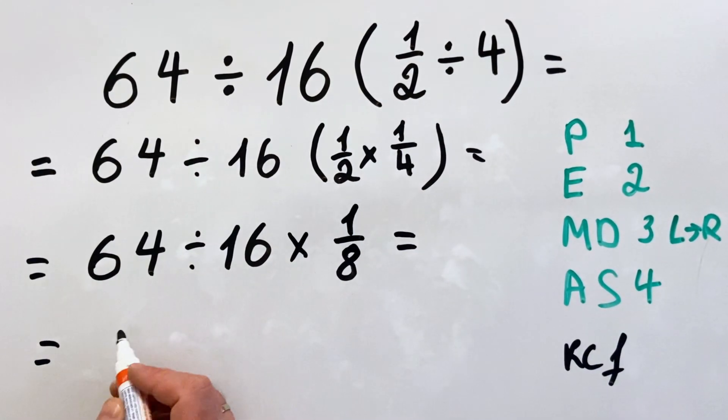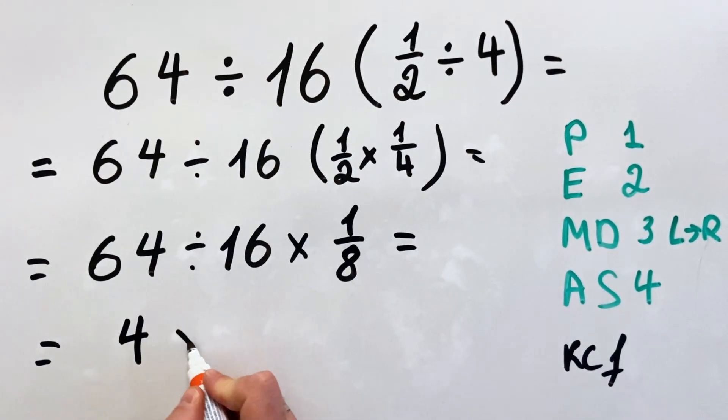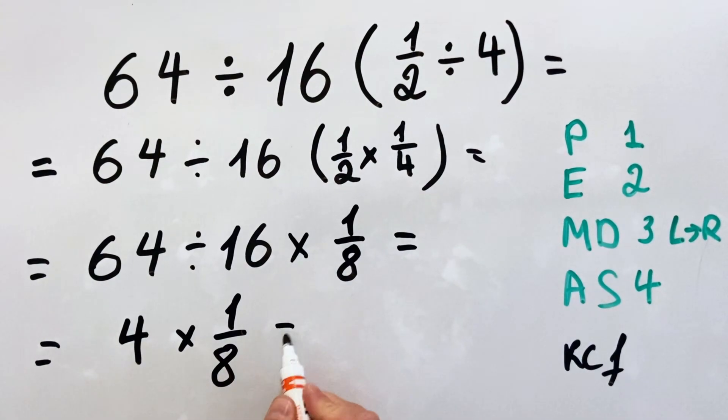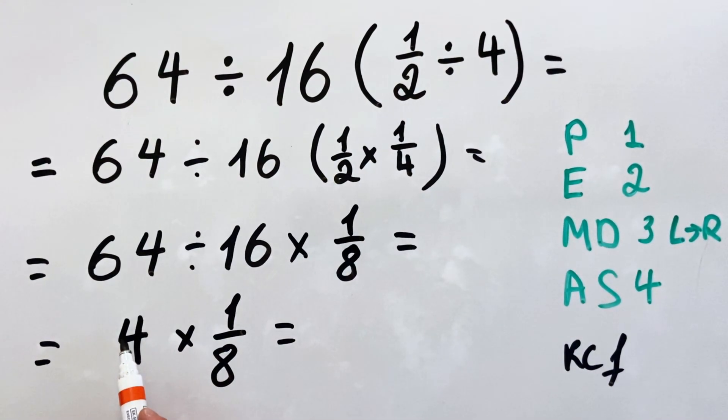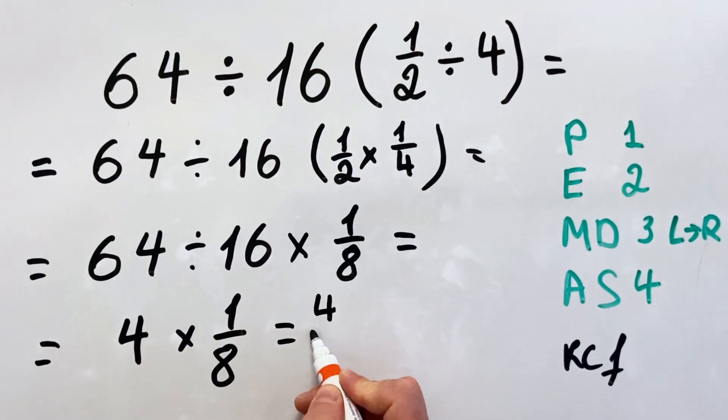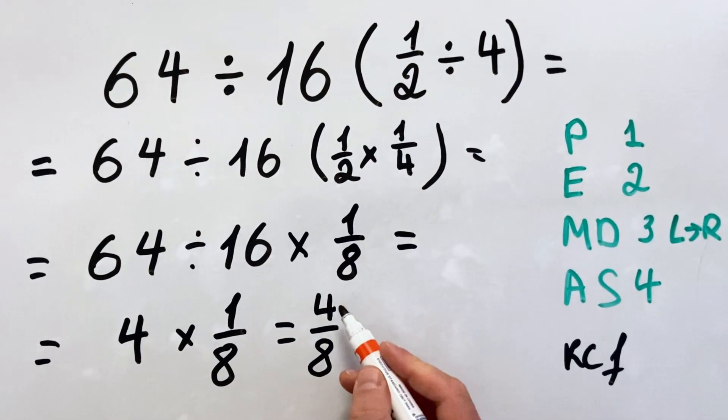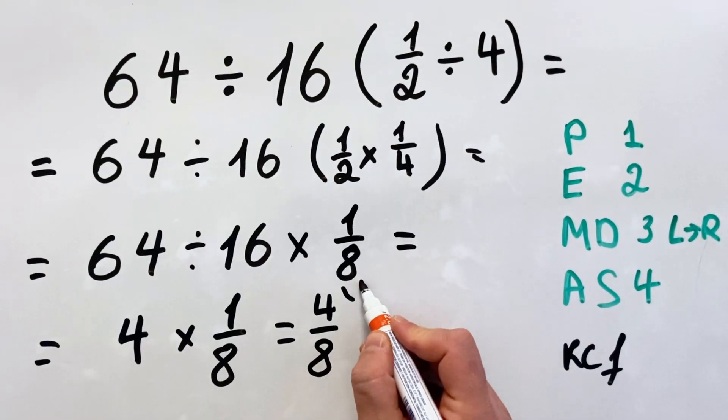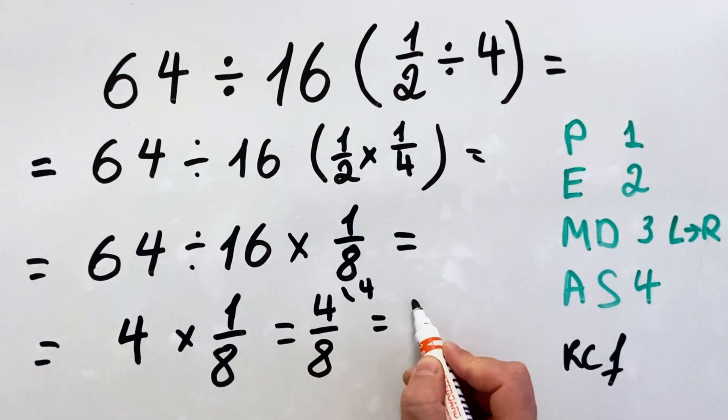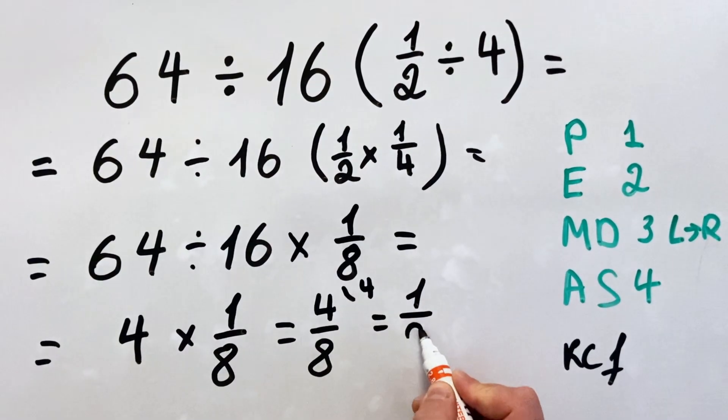And we have 4 multiplied by 1 over 8. Let's make it in a long way so nobody gets confused. We have 4 over 8, and we simplify by 4 because 8 is also divisible by 4, and we get 1 over 2.